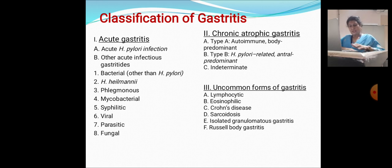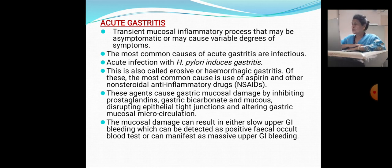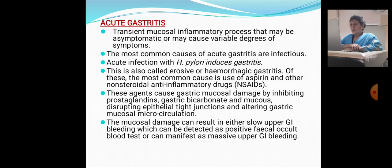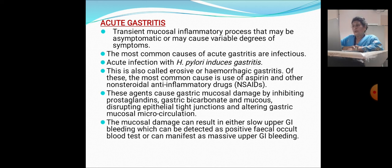Acute gastritis is a transient mucosal inflammatory process that may be asymptomatic or may present with a variable degree of symptoms. The most common causes of acute gastritis are infection, including acute infection with H. pylori, which can induce acute gastritis also called erosive or hemorrhagic gastritis.